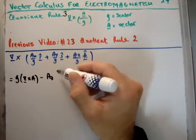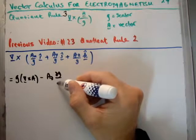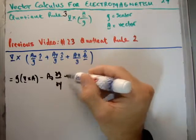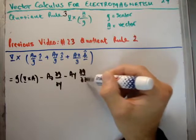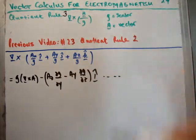So, we have minus A sub z, del g del y, minus A sub y, del g del z. And this is in the i-hat direction, right? And there are, of course, other terms.